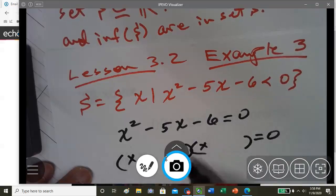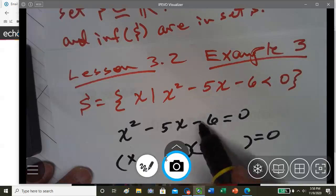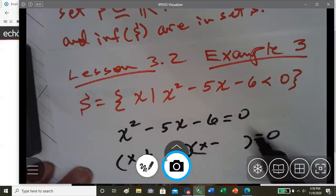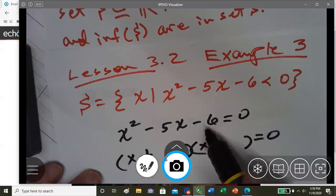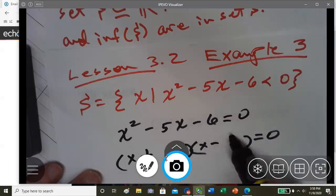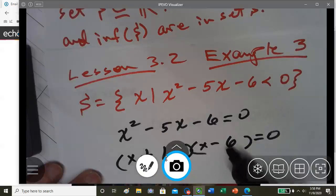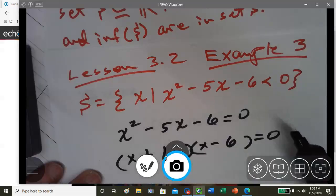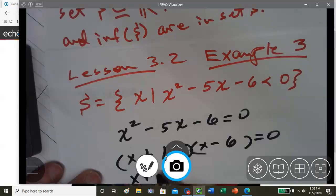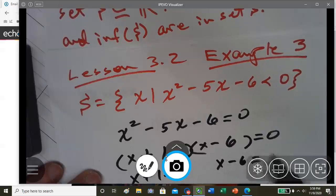So we're going to factor x and x. Since our C term is a minus, our signs are opposite. Factors of 6, so we're going to subtract - factors of 6 will be 6 and 1. And since our middle term is negative, the 6 is going to be negative. So it's going to be minus 6 and plus 1. So this will be x plus 1 equals 0 and x minus 6 equals 0.